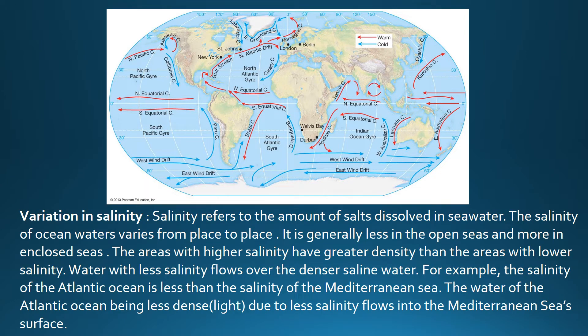Next is variation in salinity. Salinity refers to the amount of salts dissolved in seawater. The salinity of ocean waters varies from place to place — it is generally less in the open seas and more in enclosed seas. Areas with higher salinity have greater density. Water with less salinity flows over the denser saline water. For example, the salinity of the Atlantic Ocean is less than that of the Mediterranean Sea, which is an enclosed sea, so the Atlantic water flows into the Mediterranean Sea along the surface.